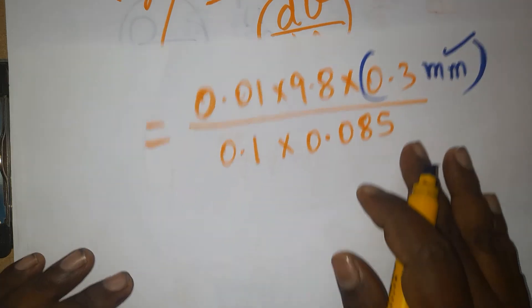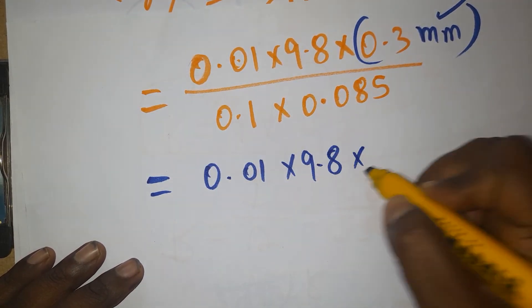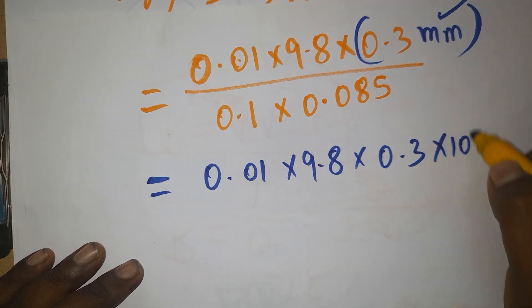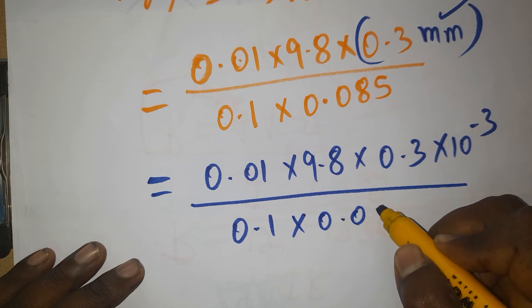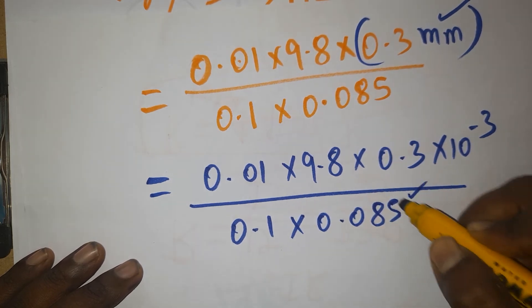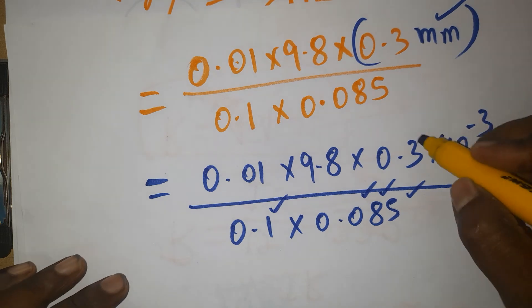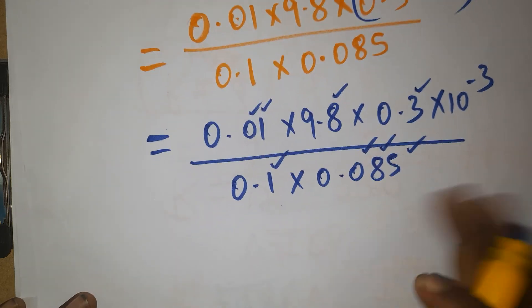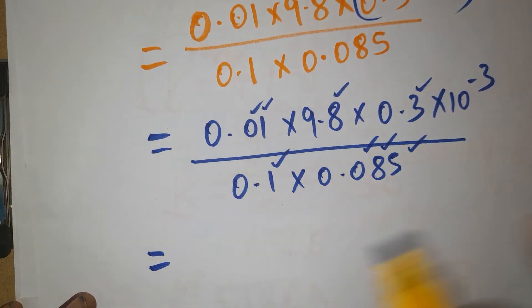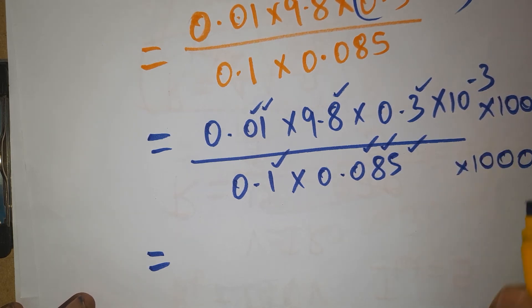0.01 times 9.8 times 0.3 times 10⁻³ divided by 0.1 times 0.085. Four decimal places in denominator, four decimal places in numerator. So you can make it as a round number. Four decimals numerator and denominator, multiply by 10,000 in numerator and 10,000 in denominator to get round numbers.